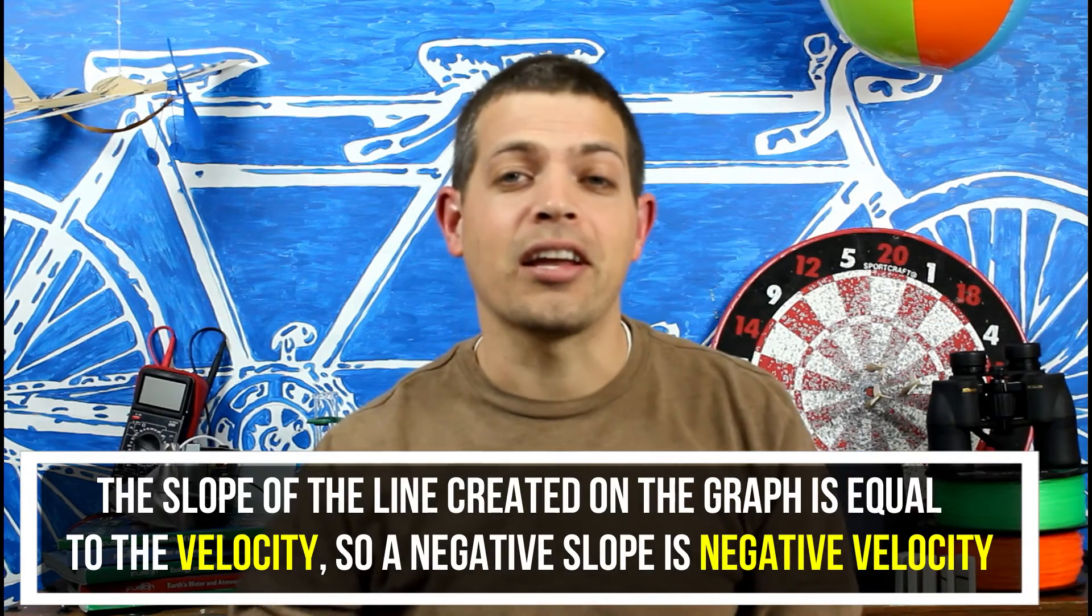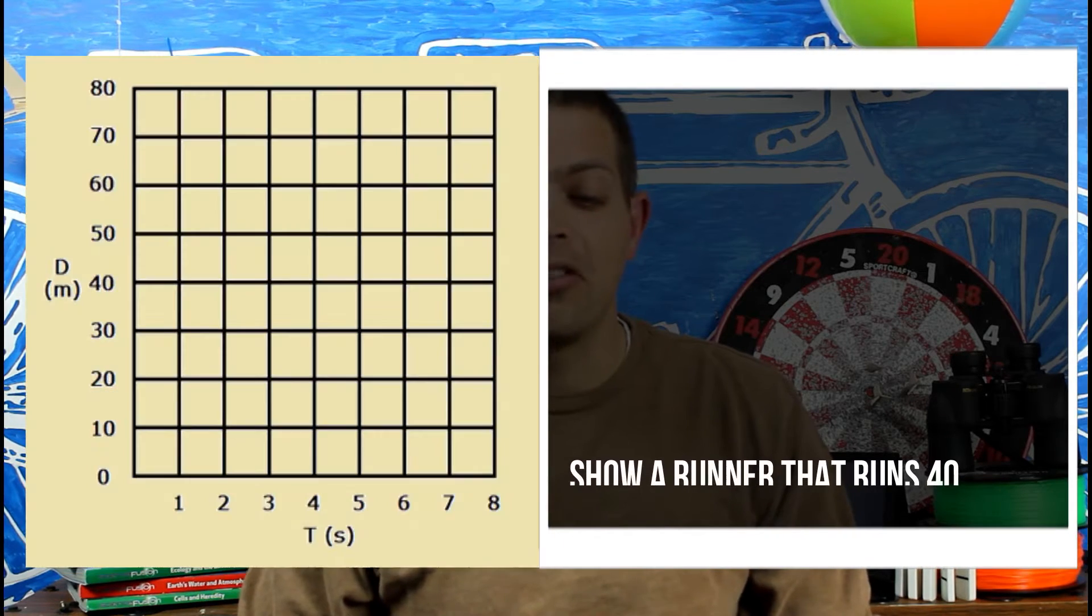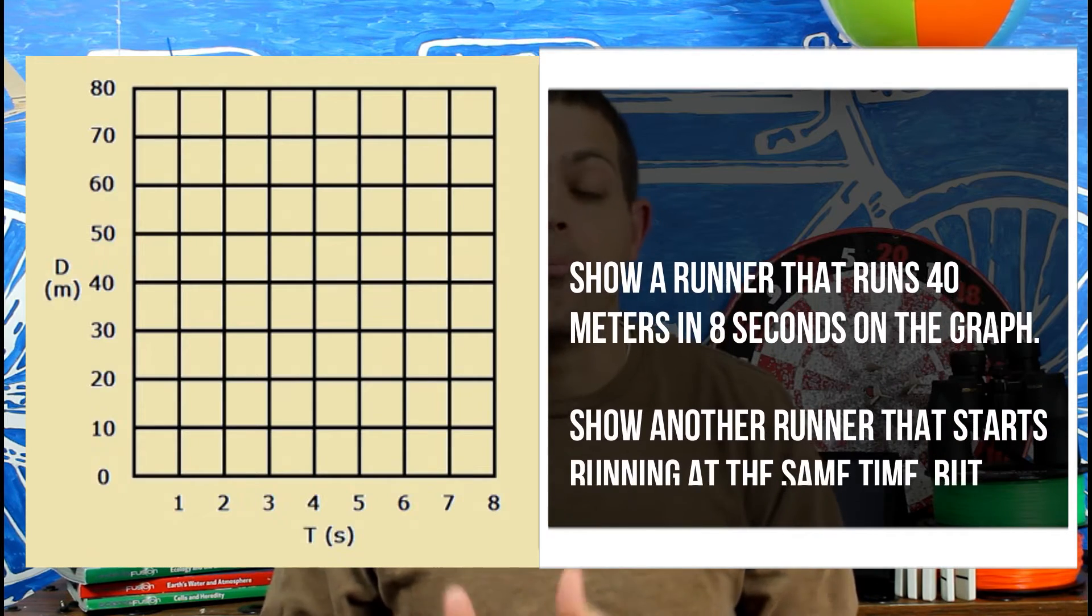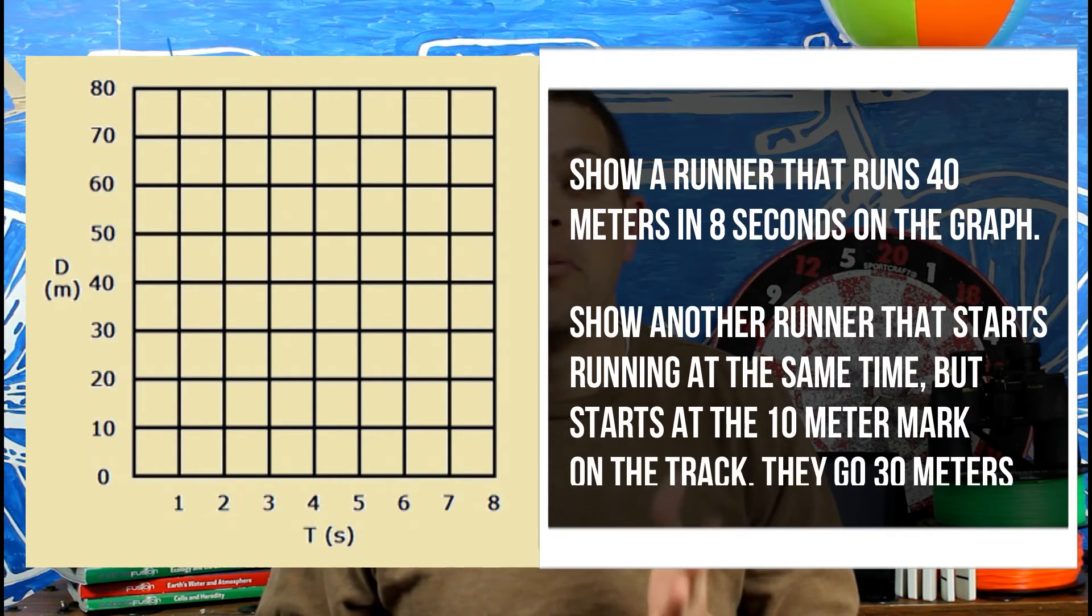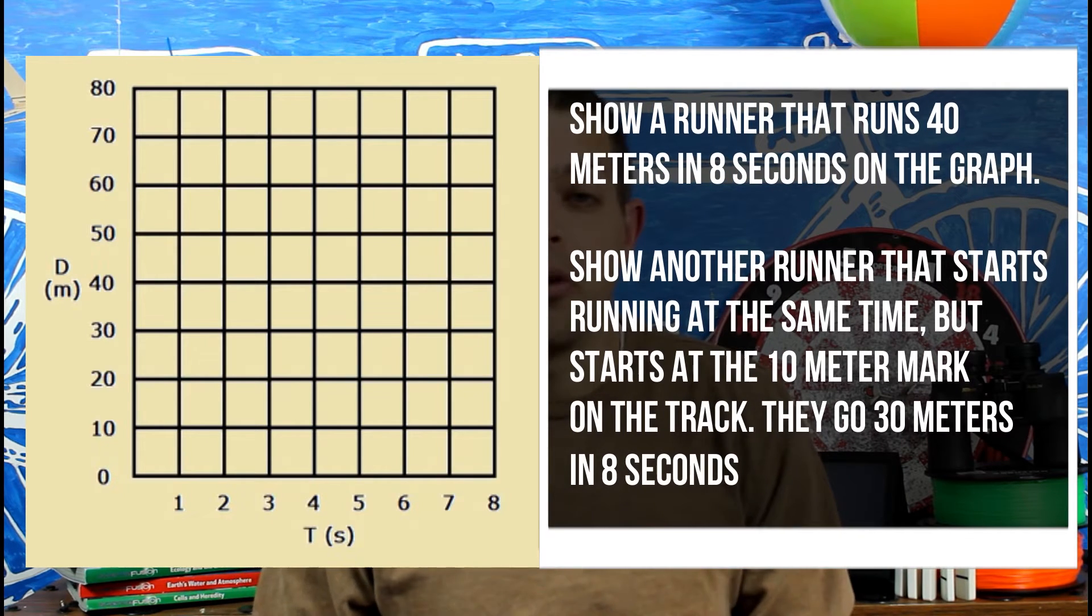So let's take a look at a couple problems here to help us understand this. Our first problem has two runners that are starting off on a track. The first runner ran 40 meters in eight seconds. He's going to start at the beginning or at the zero meter mark. On the timer, it's going to be zero seconds too. So our first point is zero, zero.